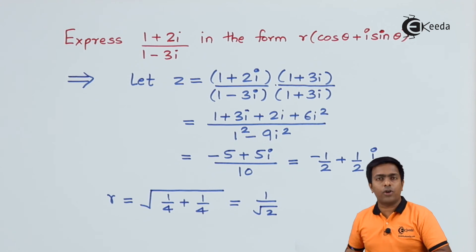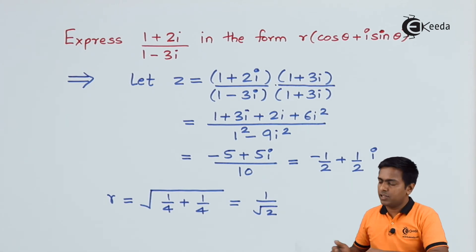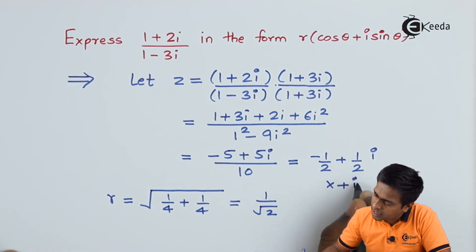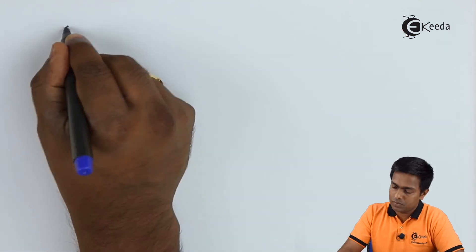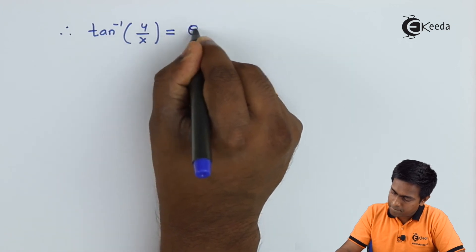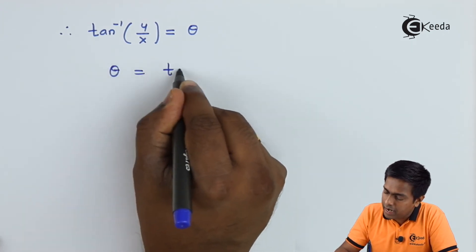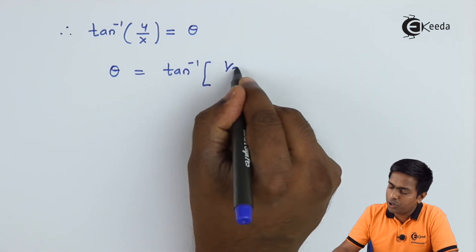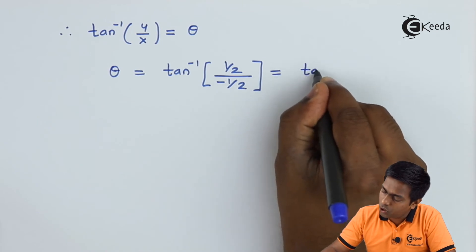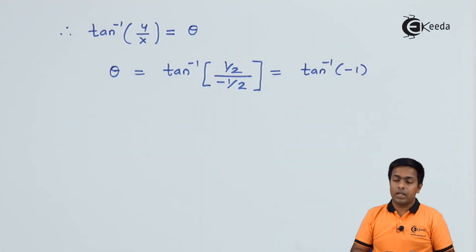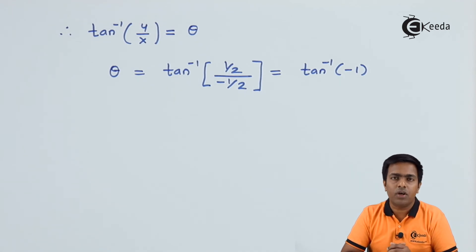For the argument, θ = tan⁻¹(y/x), where x = -1/2 and y = 1/2. So θ = tan⁻¹((1/2) / (-1/2)) = tan⁻¹(-1). To find the argument correctly, remember the rules from the previous video — we must first check which quadrant the complex number lies in.